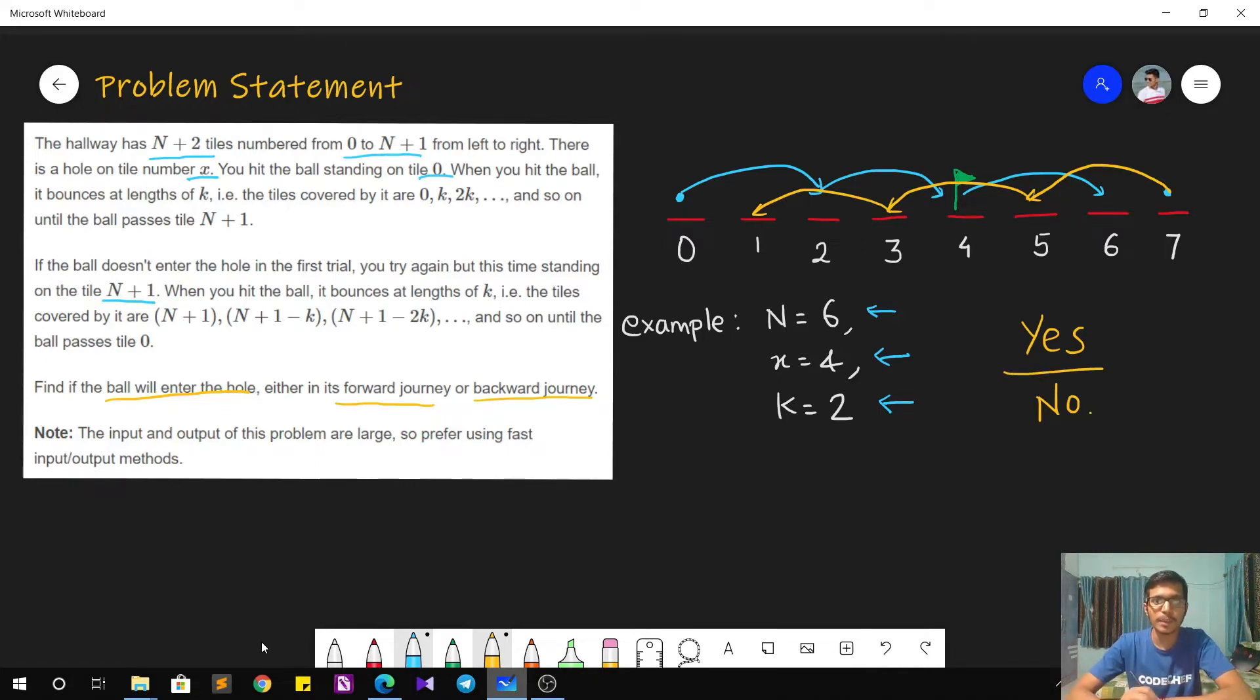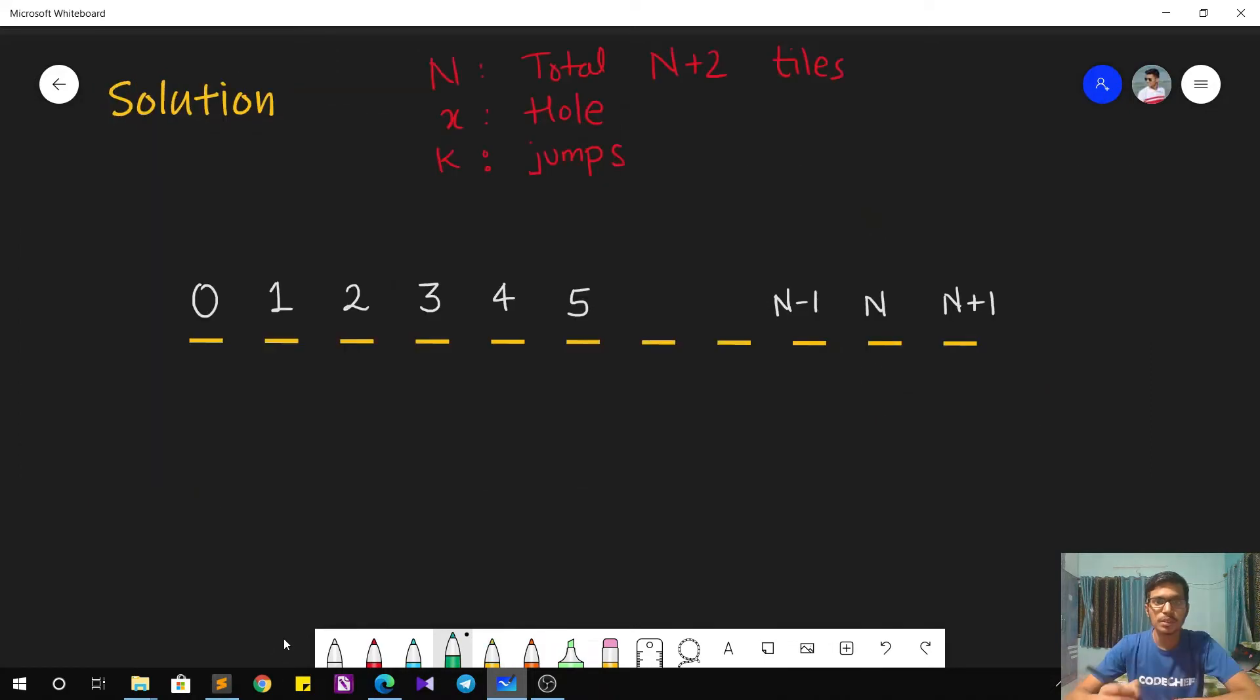The question is pretty simple. Now let's see how to approach and write the solution. The solution approach goes as follows. It is pretty evident from the question and intuitive as well that the answer only depends on the values of n, x and k. For our understanding and better visualization, I have drawn the tiles that are numbered from 0 to n plus 1, and this is from left to right numbering. This will be helpful for the forward journey, that is when I shoot my ball from the leftmost tile.